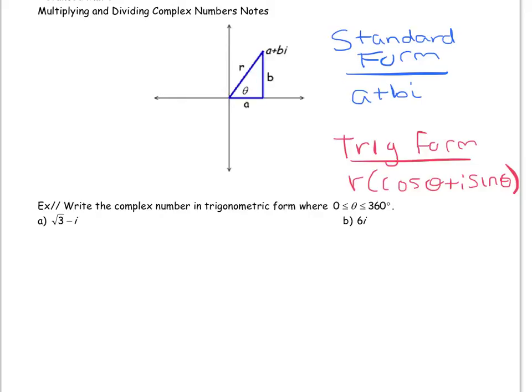Our first goal here is to write these complex numbers in trig form. For √3 minus i, first we graph it. Here's my complex plane. √3 minus i would mean I go right √3 and then down 1i, so it would be somewhere here. This distance would be √3 and this would be negative 1, because this is like the i axis and this is the real axis.